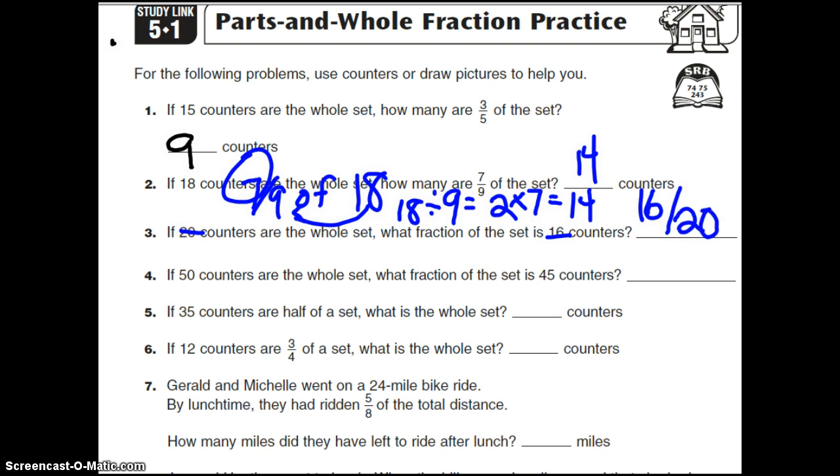Our next one, if 50 counters are the whole, and you have 45, you have 45 out of a possible 50.